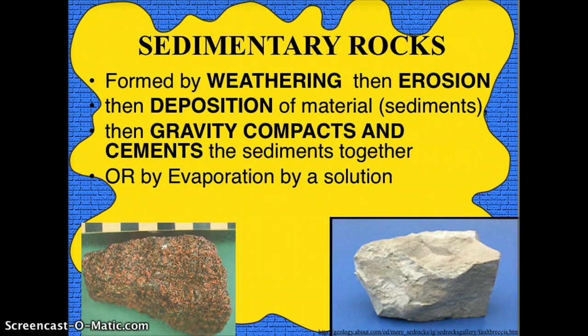The next group is sedimentary. These are formed by weathering, then erosion, then deposition of the sediments, then gravity compacts and cements the sediments together. Another way these can form is by evaporation of a solution, because there are some minerals that are classified as sedimentary rocks.